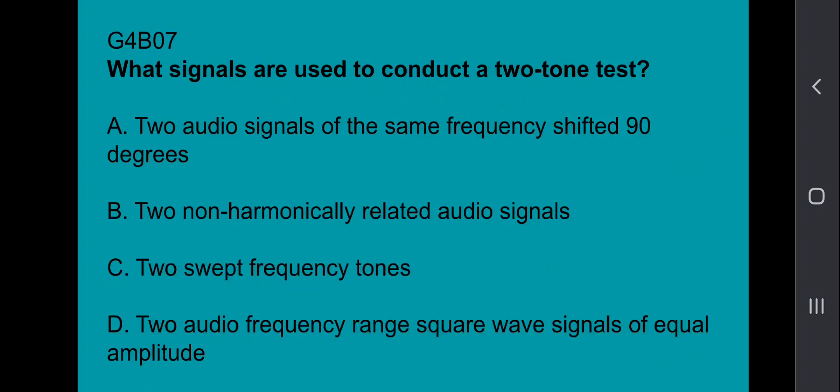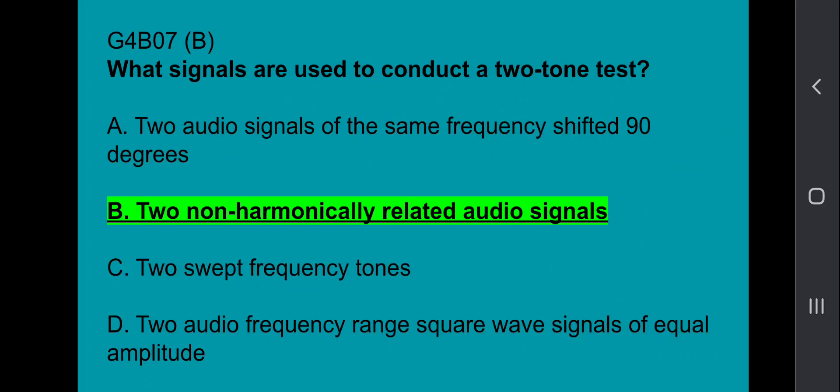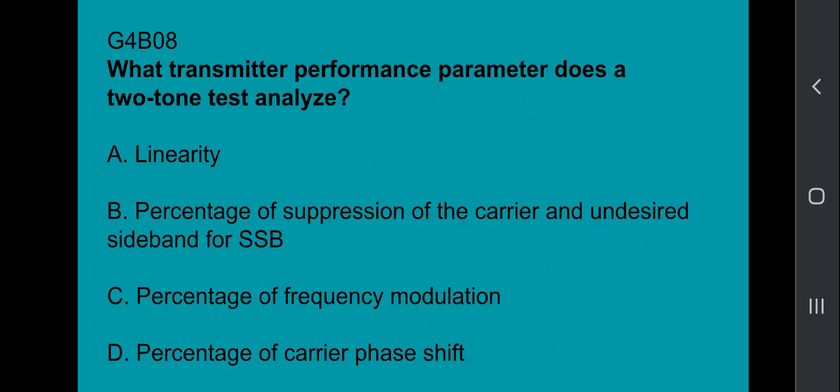G4B07, what signals are used to conduct a two-tone test? That would be two non-harmonically related audio signals. G4B08, what transmitter performance parameter does a two-tone test analyze? And that's linearity.